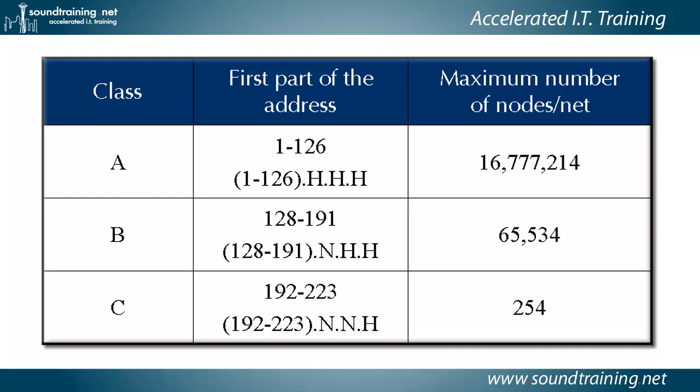For a class B, the formula is 2 to the power of 16 minus 2, which gives us 65,534. And for a class C, it's 2 to the power of 8 minus 2, which gives us 254 nodes per network.